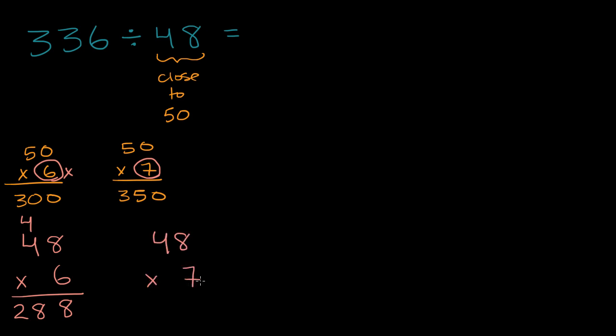Let me try 48 times seven. Eight times seven is 56. Four times seven is 28, plus three, 336. That's exactly right. So there you have it.